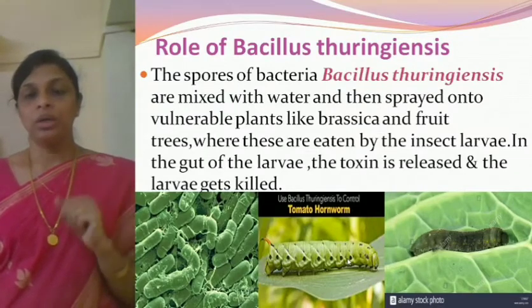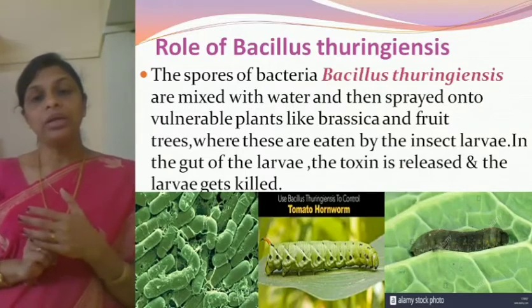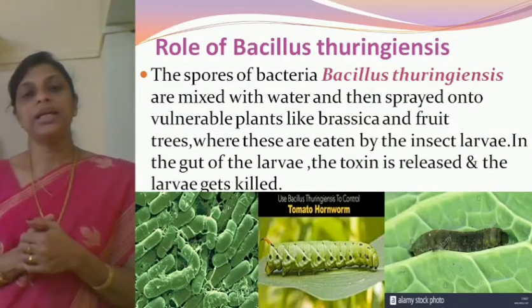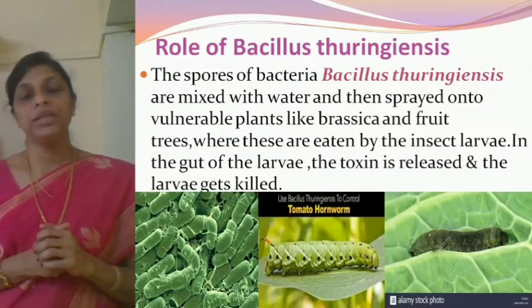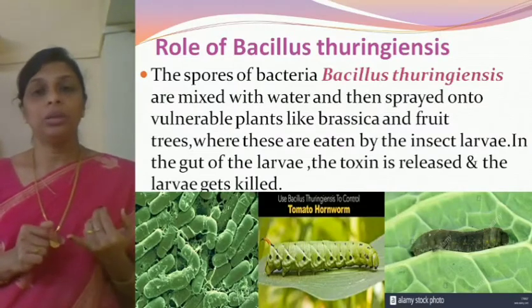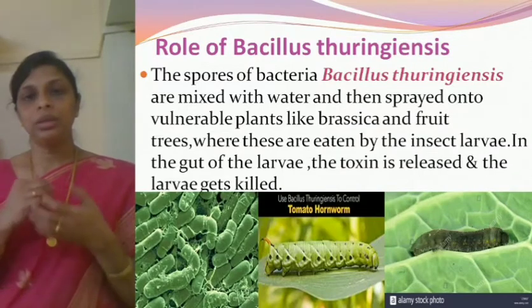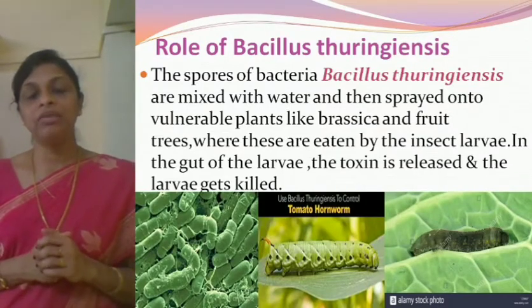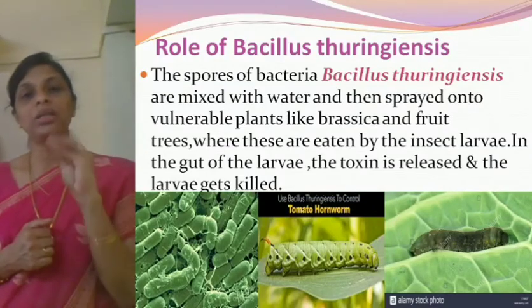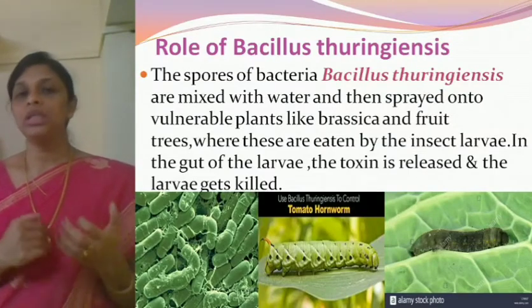Using biotechnology, the Cry gene has been inserted into plants like tomato, brinjal, and cotton. Such plants into which these genes are inserted are called Bt plants — Bt stands for Bacillus thuringiensis. Nowadays we have Bt cotton, Bt brinjal, Bt tomato, and so on. When the gene is already present inside the plant, we don't have to spray spores — the moment the caterpillar starts eating, it dies immediately because the gene that produces the toxin is already present in the plant.